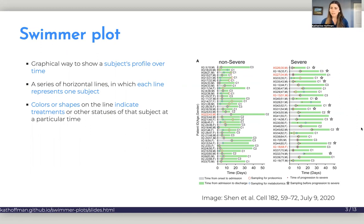This example on the right is a swimmer plot taken from Cell. It's on COVID patients, showing the composition of the patients, their demographics, and the circles on the plot are indicating when the patient was sampled for proteomics. Swimmer plots can be used in manuscripts, but they can also be really great for exploratory data analysis or for quick presentations to show different aspects of some type of study cohort.